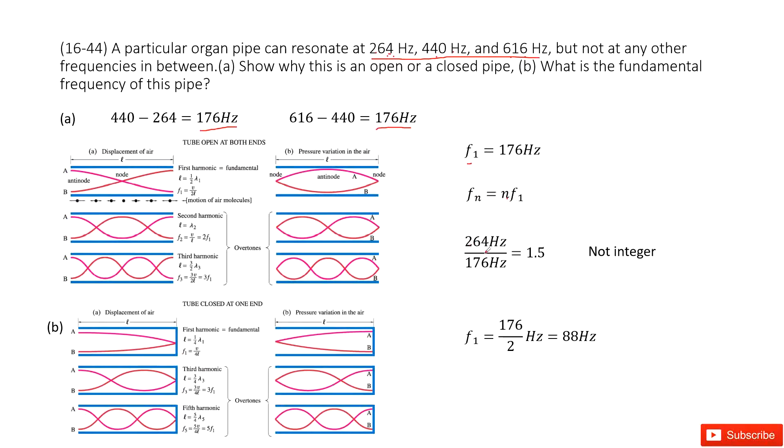We use 264 divided by 176—this is Fn divided by F1. It must be an integer, but when we do this calculation, we get 1.5, which is not an integer.